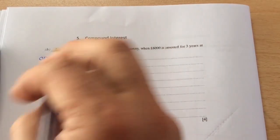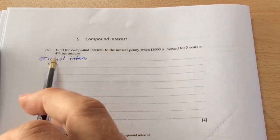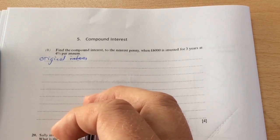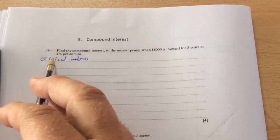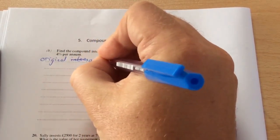Topic five: compound interest. To find the compound interest when £6000 is invested for three years at 4% per annum, there's two different ways of doing it. If you use the multiplier method, we say the original amount is 100%.